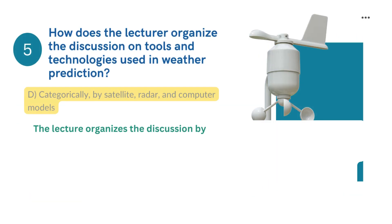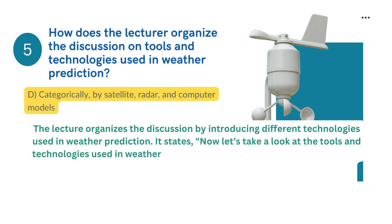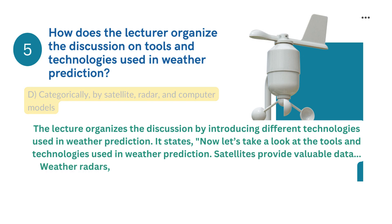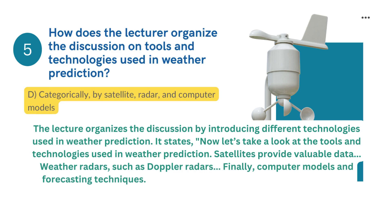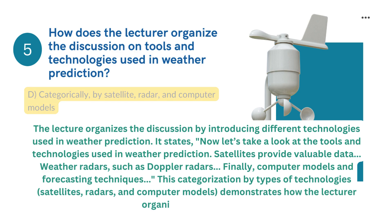Answer 5: The lecture organizes the discussion by introducing different technologies used in weather prediction. It states, 'Now let's take a look at the tools and technologies used in weather prediction.' Satellites provide valuable data; weather radars, such as Doppler radars; and finally, computer models and forecasting techniques. This categorization by types of technologies—satellites, radars, and computer models—demonstrates how the lecturer organizes the discussion.